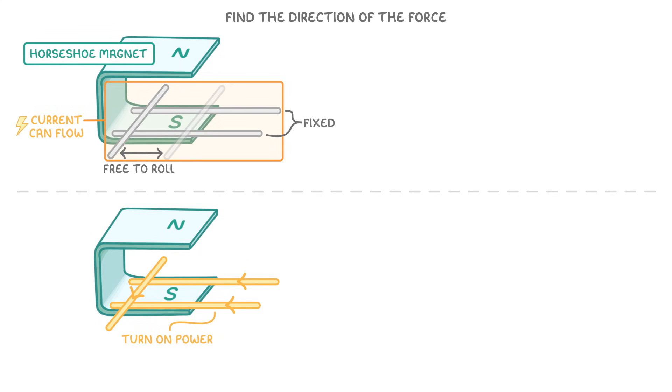As soon as we turn on the power source, and the rails generate their own magnetic field, it will interact with the horseshoe magnet's field, and experience a force.